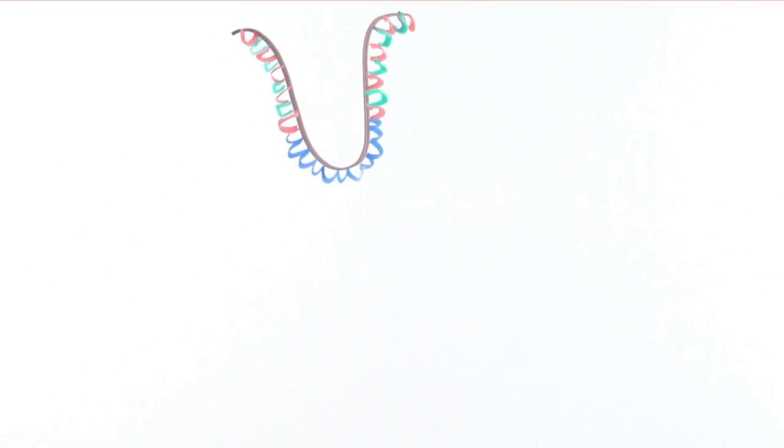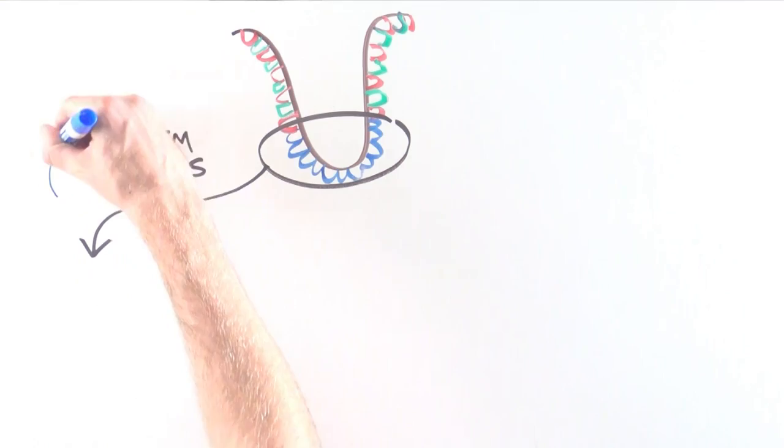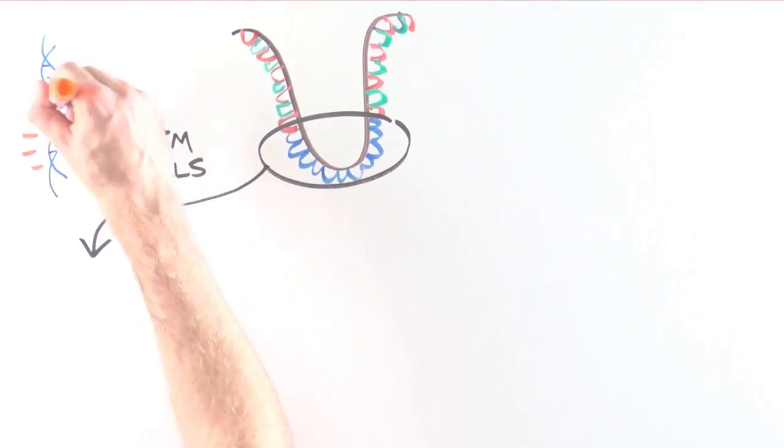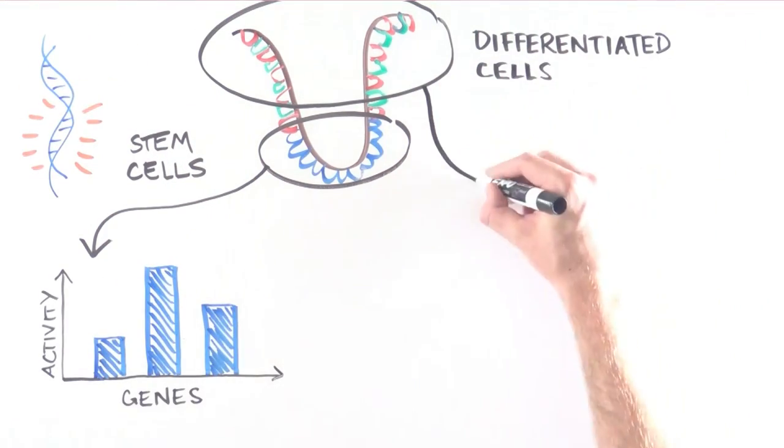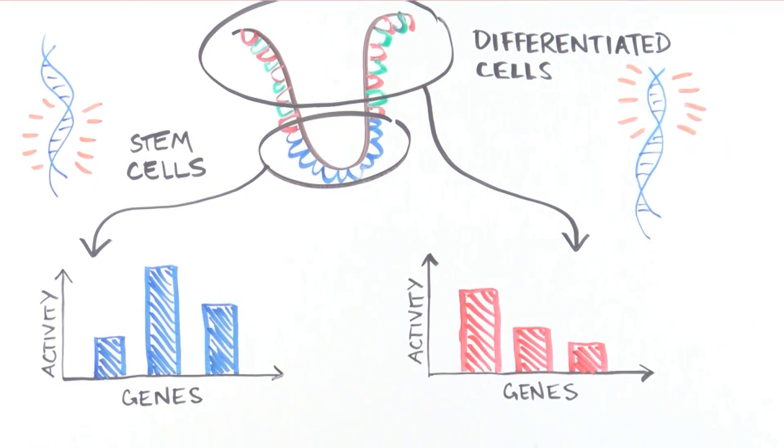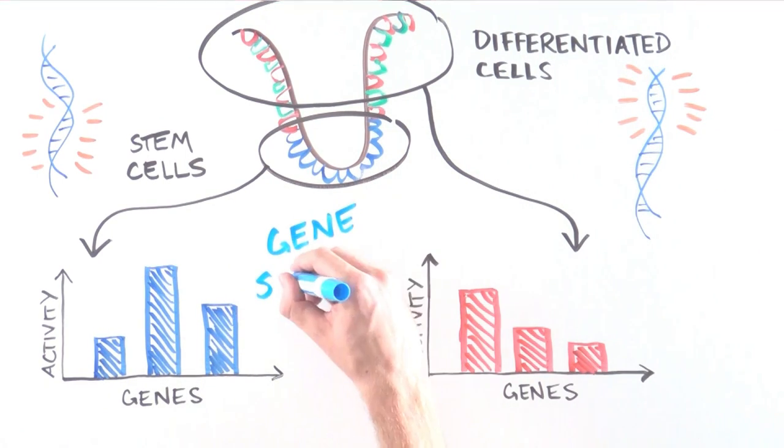First, scientists determine what genes or chunks of DNA are active in normal, non-cancerous colon stem cells compared to differentiated cells of the normal colon. The sets of active genes in a cell is called a gene signature.